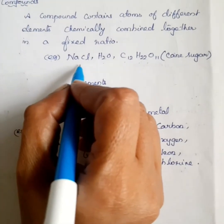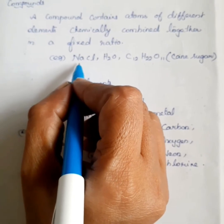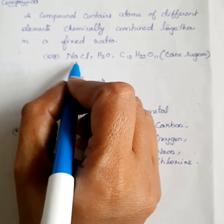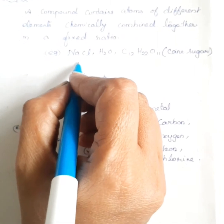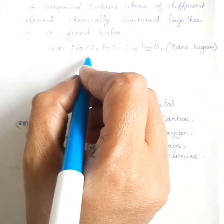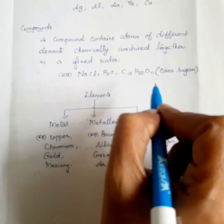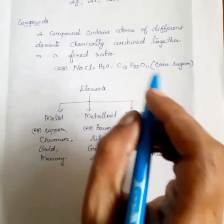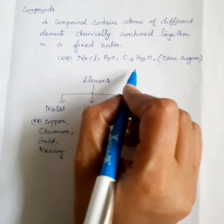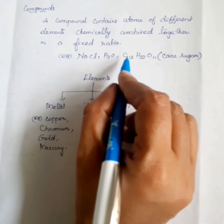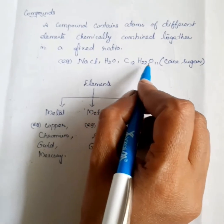The next example is sodium chloride. Its chemical formula is NaCl, and it also contains two elements: sodium and chlorine, combined together to form the compound. Another example is cane sugar, which is made up of three elements: carbon, hydrogen, and oxygen.